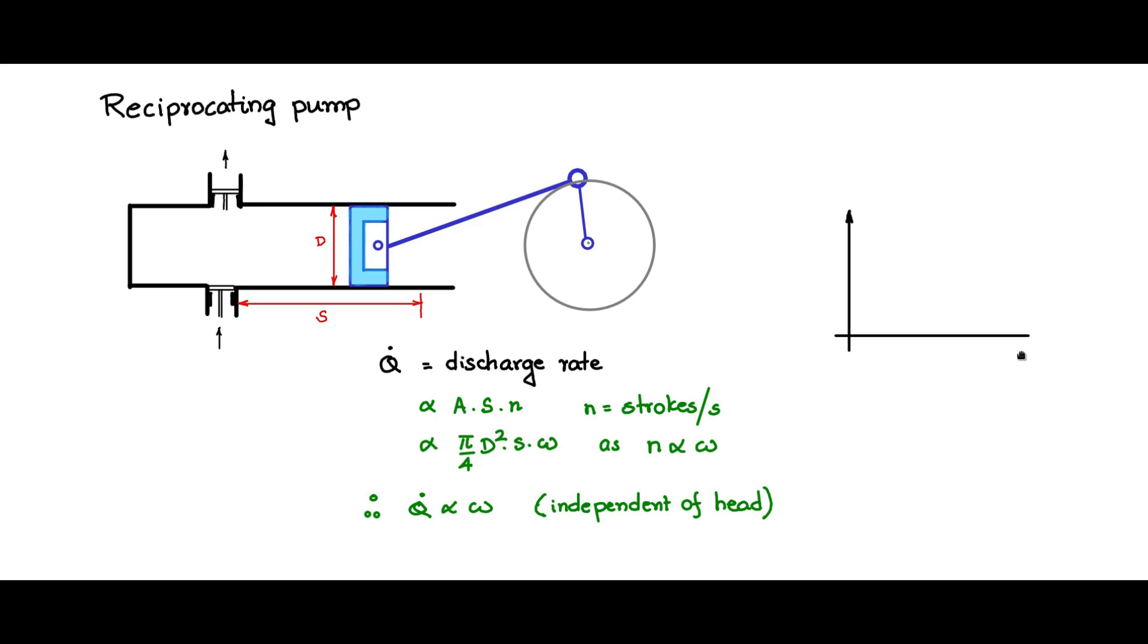So if you draw the flow rate versus the head, it will appear as though it just goes vertically up in the ideal sense. So independent of the pressure, it can deliver a particular flow rate.